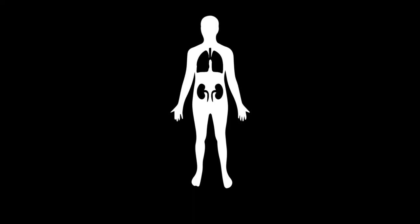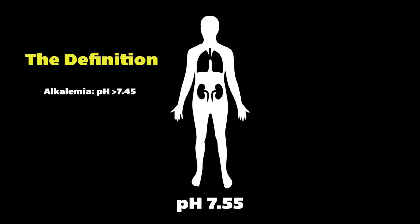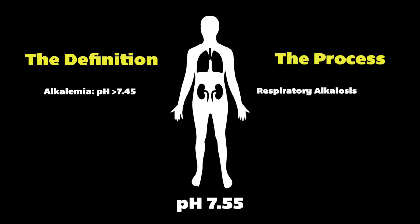When we have a patient with a pH of 7.55, we know right away that they are alkalemic. The alkalemia in this patient can be caused by either a respiratory alkalosis — in which case there would be a decrease in PaCO2 causing an increase in pH — or it would be caused by a metabolic alkalosis, where there would be an increase in bicarb causing an increase in pH.